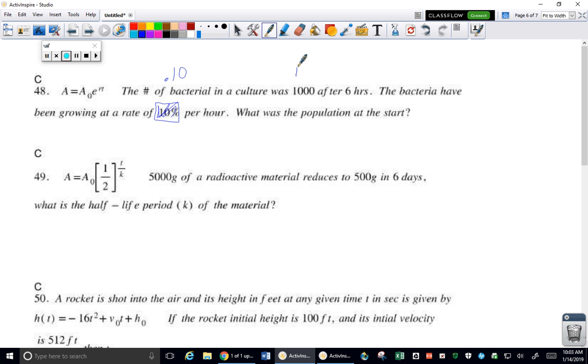So this is our A value. We're looking for A sub zero, the population at time zero. We have 1,000 after six hours. We want to know what A sub zero is if our growth rate is 10% and it was six hours to get there.